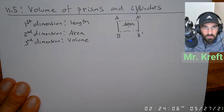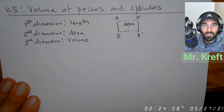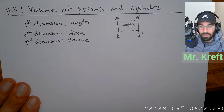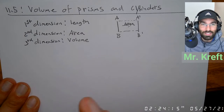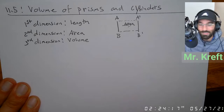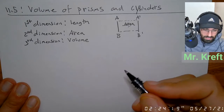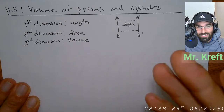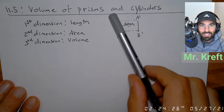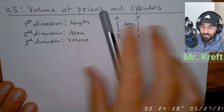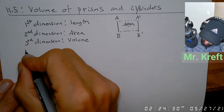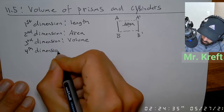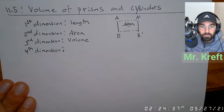In calculus there are really only three main parts: limits, derivatives, and integrals. Finding volume is an integral — it's a 2D surface in motion. If you have a two-dimensional surface and you move it, you get volume. Before we get there — does anybody know what the fourth dimension is?